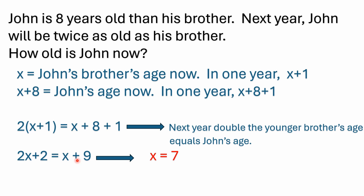So if we simplify this equation and try to solve for x, you're going to have two times x plus two times one, which gives you two x plus two, equals x plus nine. It's pretty simple from here. If you subtracted two from both sides of the equation, this two would go away and this nine would become seven.